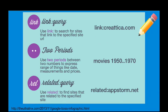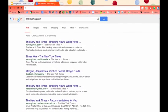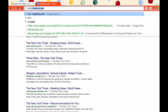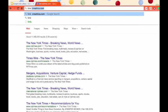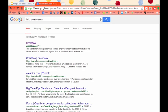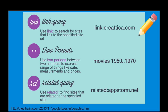You can also search for a specific link within a particular site. You can include two periods between numbers to give you a range — like dates or prices. You can also do a related search to find sites related to a specific site you've already found good information on.